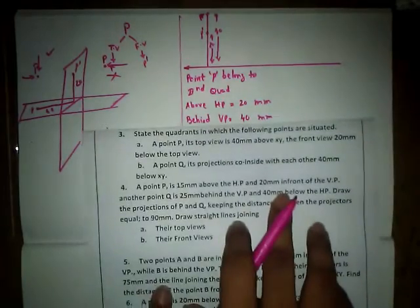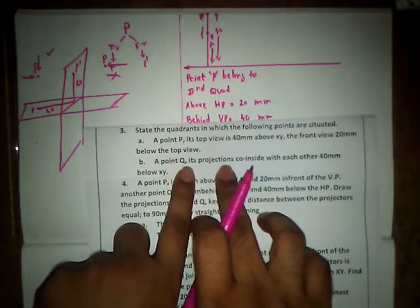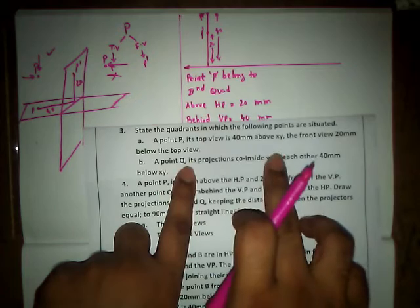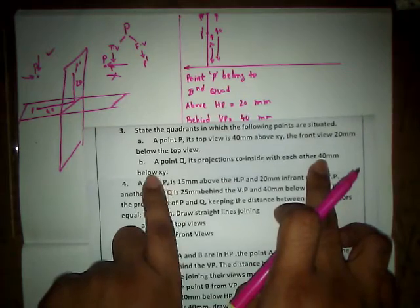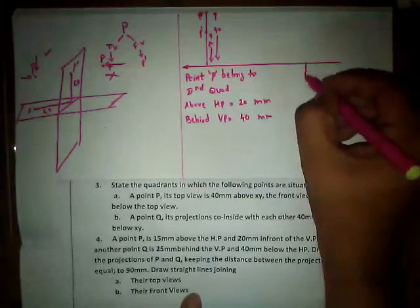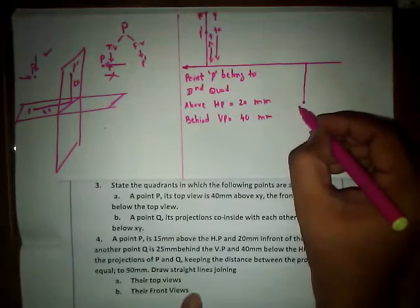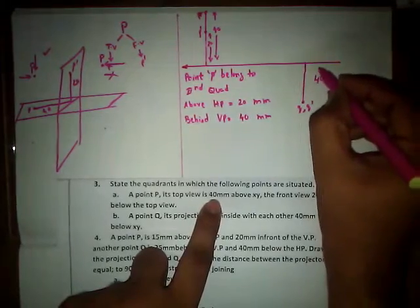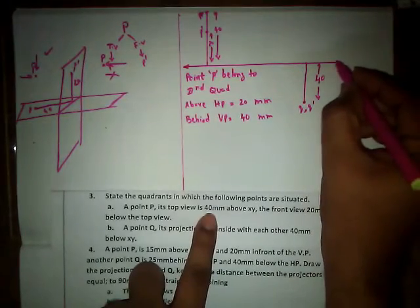For question 2: point Q has projections — both the front view Q dash and the top view small q — that coincide with each other, both at 40 mm below the XY reference line. So below the XY reference line, both projections Q and Q dash are marked at a distance of 40 mm.